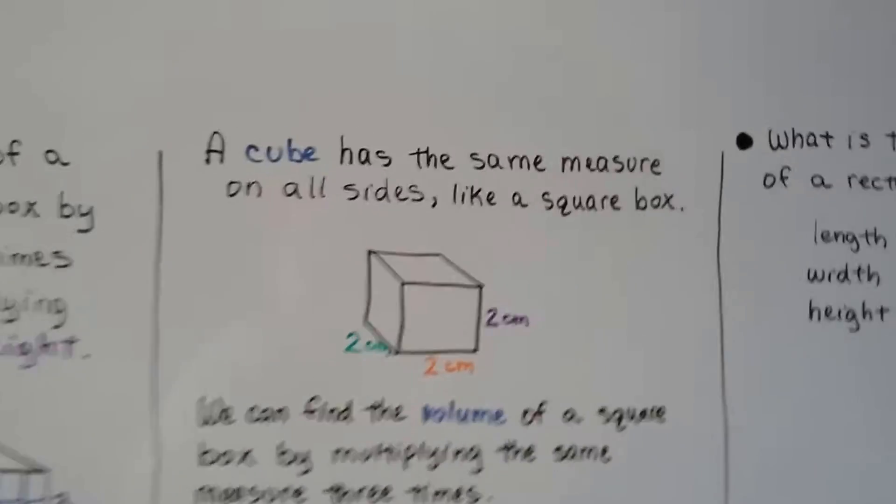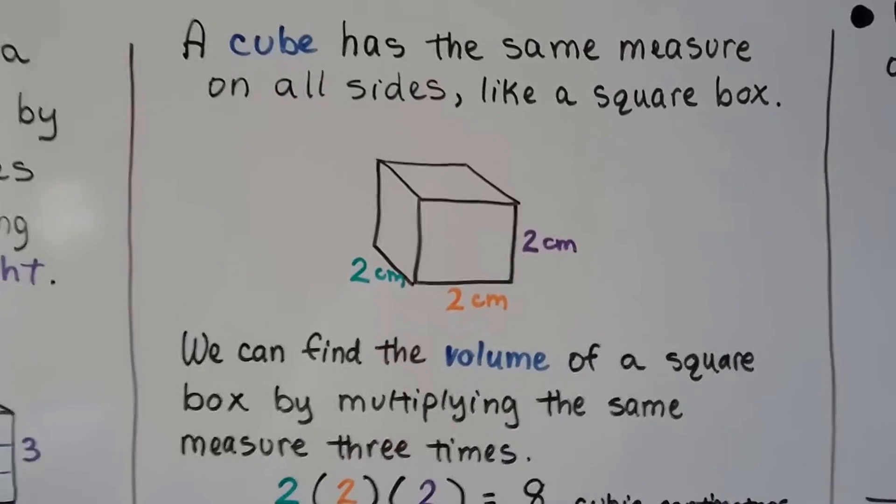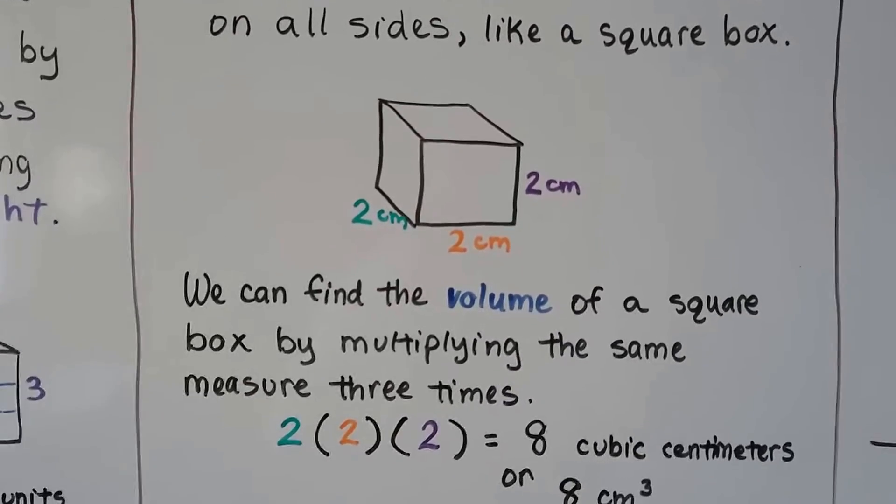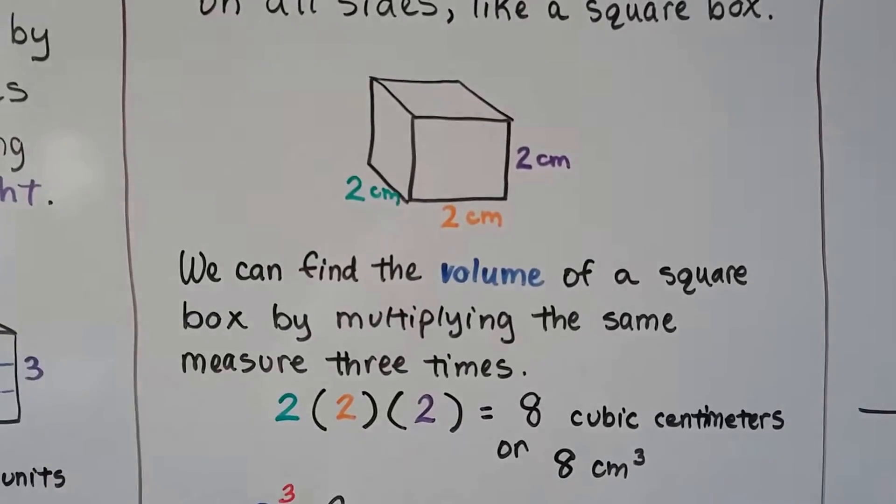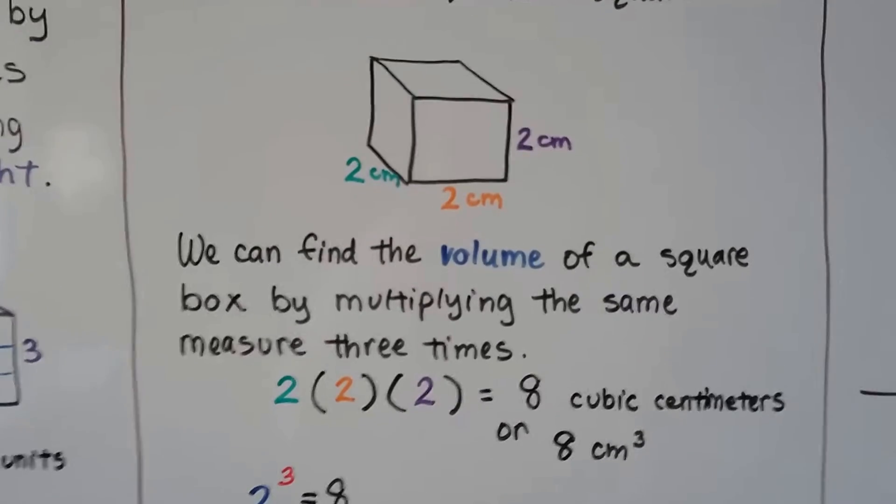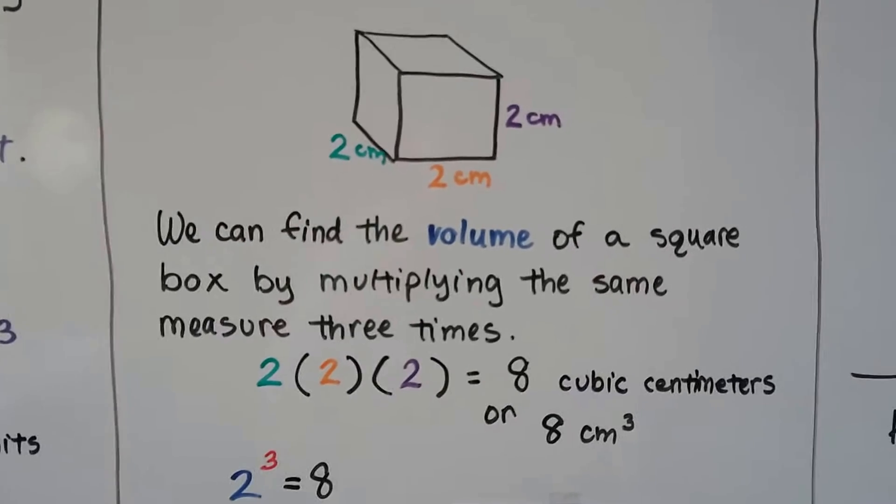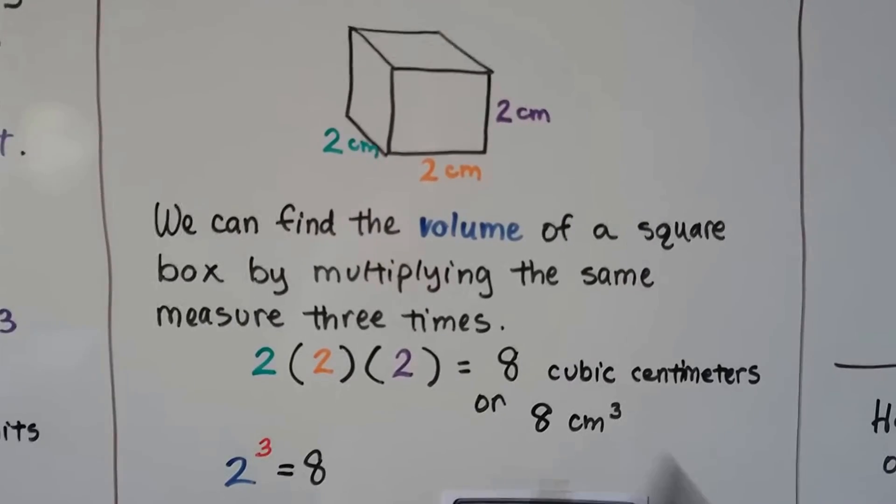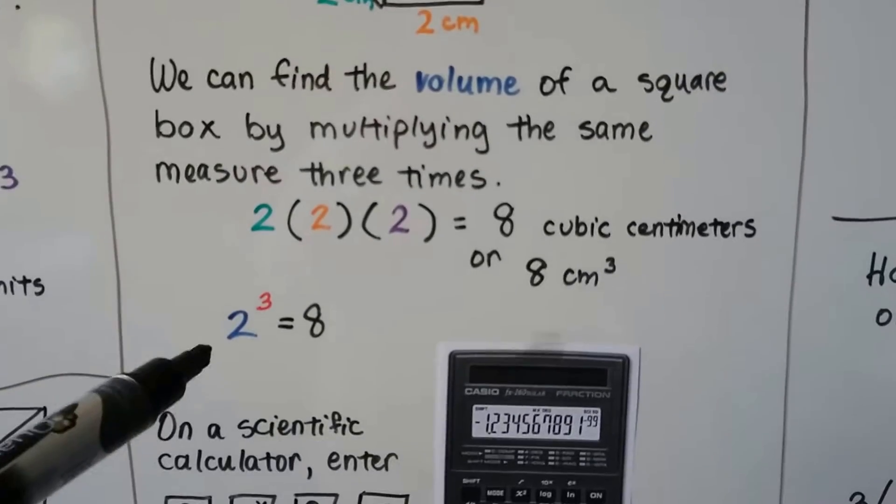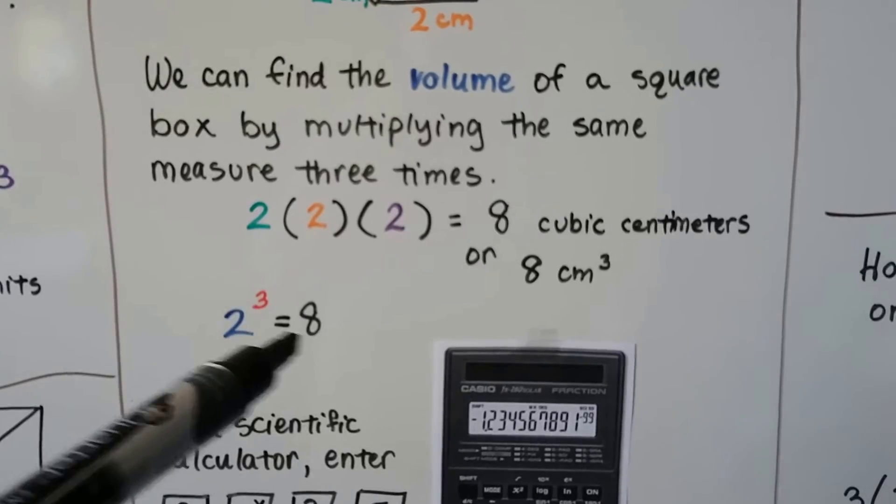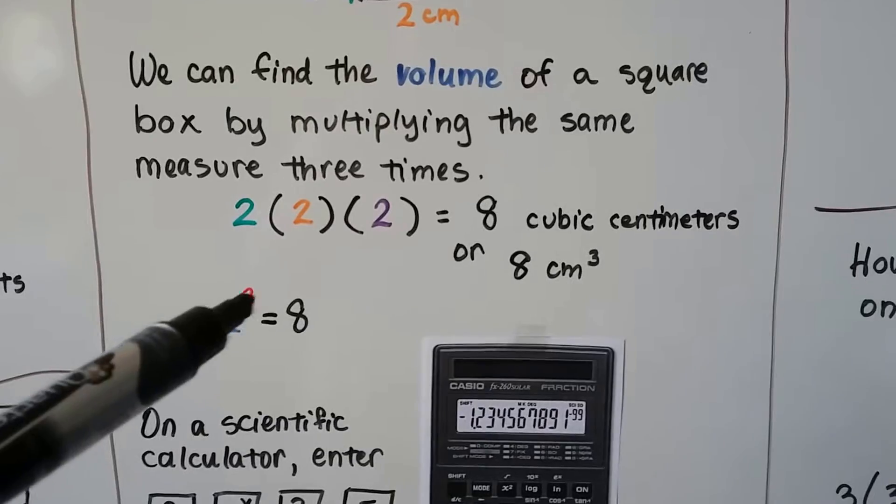A cube has the same measure on all sides like a square box. We can find the volume of a square box by multiplying the same measure three times. 2 times 2 times 2. Every side is 2 centimeters, so it's 2 centimeters cubed. 2 times 2 is 4 times 2 is 8. So this would be 8 cubic centimeters or 8 centimeters cubed. That's how we would read it with the little three exponent. So 2 cubed equals 8. It's how many times we're multiplying 2 to itself 3 times.